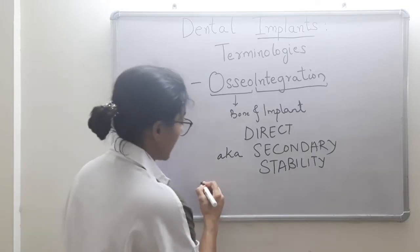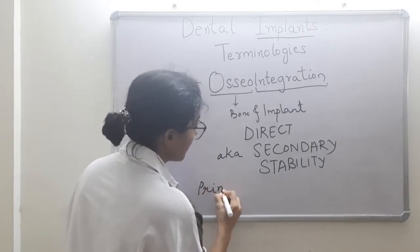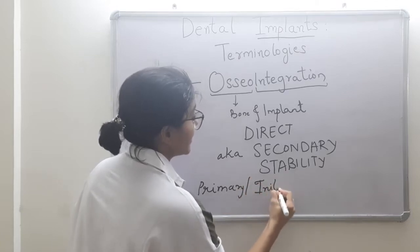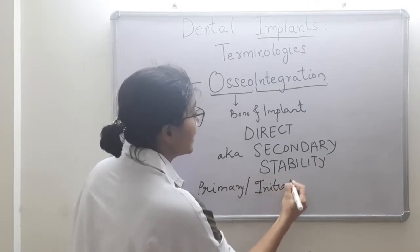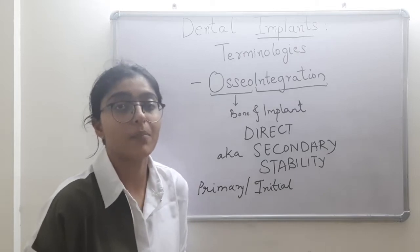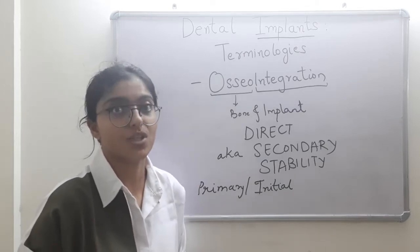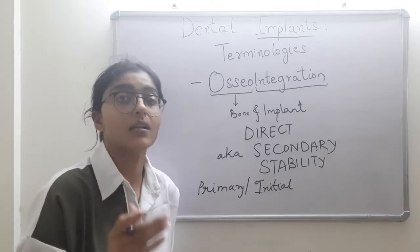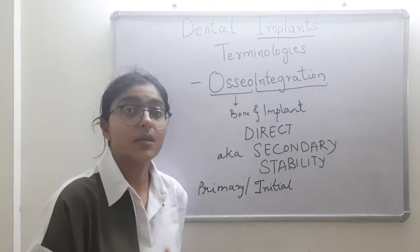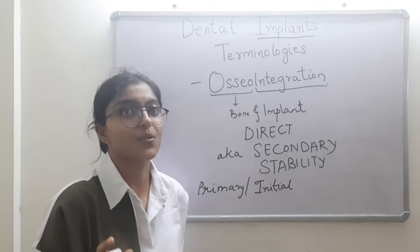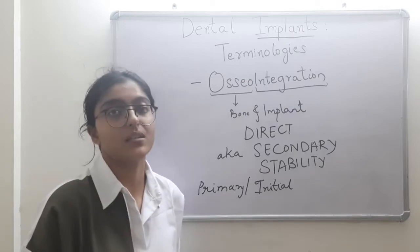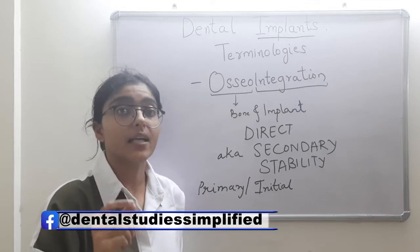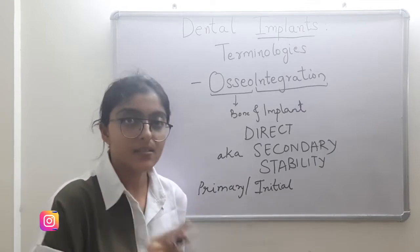Primary stability, also known as initial stability, is the stability attained at the time of implant insertion. This stability is mainly determined by the implant macrostructure — the characteristics and type of implant — and the surgical procedure. Both combined together determine the primary stability.